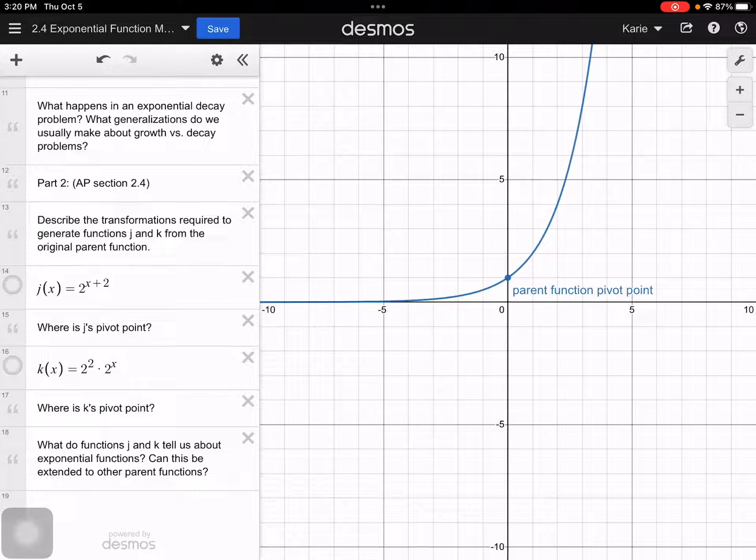Okay, so then the next thing, it says describe the transformations required to generate functions j and k from the parent function. So j is going to take my graph, and the plus 2 tells us that we're going to shift it to the left 2. So my pivot point right here is going to move left two units. So we're going to have a point somewhere over here at (-2,1), and then we have this, we'll follow that same sort of shape. So when I turn it on, there we go, sure enough.